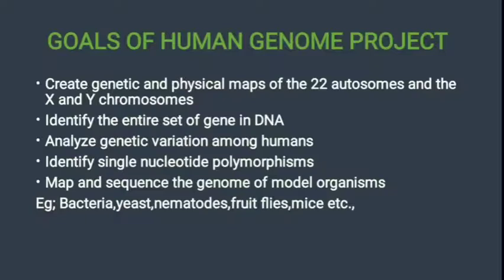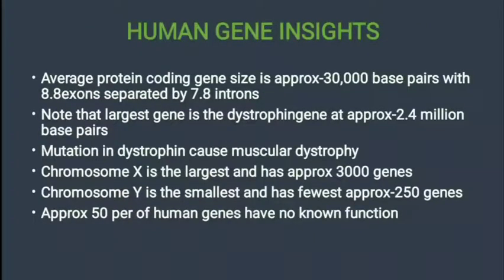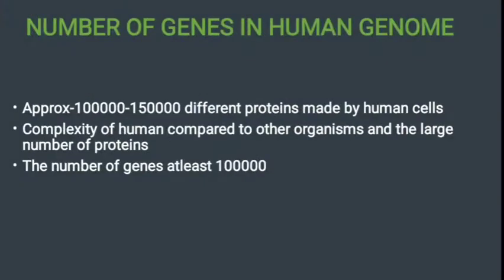Next we see human gene insights. The average protein-coding gene size is approximately 30,000 base pairs with 8.8 exons separated by 7.8 introns. Note that the largest gene is the dystrophin gene at approximately 2.4 million base pairs — mutations in dystrophin cause muscular dystrophy. Chromosome X is the largest and has approximately 250 genes. Approximately 50 percent of human genes have no known function.